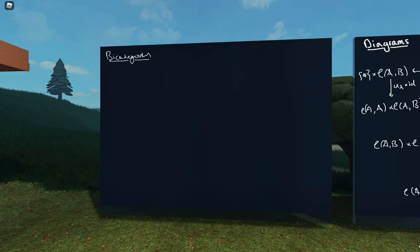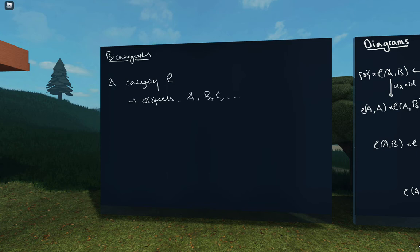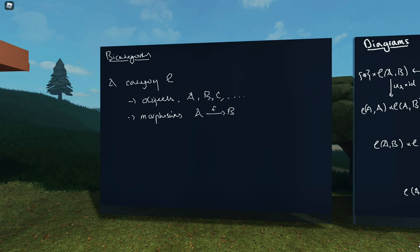To begin, let's look at a category — just a reminder on what a category is. A category C consists of objects, which we'll call A, B, C, et cetera, and morphisms. We'll denote morphisms using an arrow between objects as usual, and we'll denote the set of morphisms from an object A to an object B by this notation here.